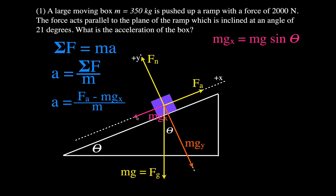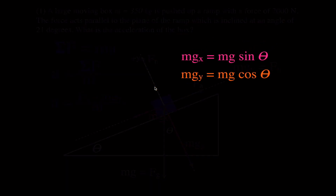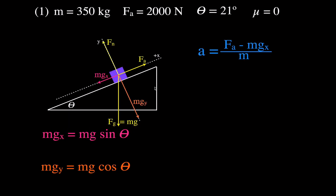Remember that to calculate mgx it's simply mg times the sine of the angle, because that force is opposite our angle and the opposite side uses sine. The y component is mg times the cosine of the angle. Also remember that the y component of gravity and the normal force are equal in magnitude but opposite in direction. I like to calculate the magnitude of the forces before putting them into the equation.